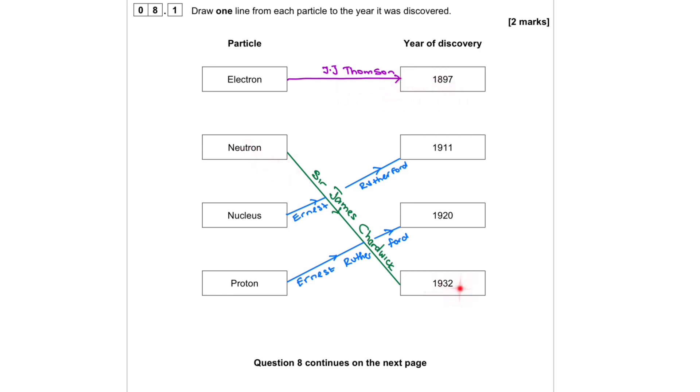Neutron 1932 by Sir James Chadwick. Nucleus Ernest Rutherford 1911. Proton Ernest Rutherford 1920.